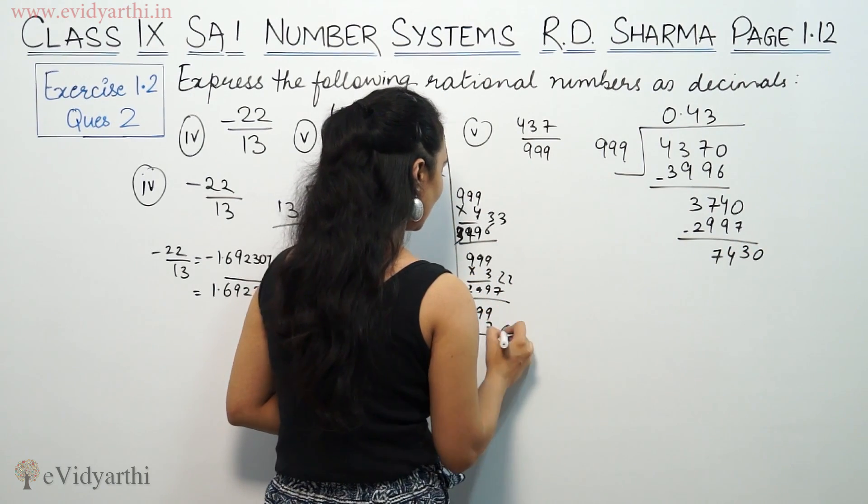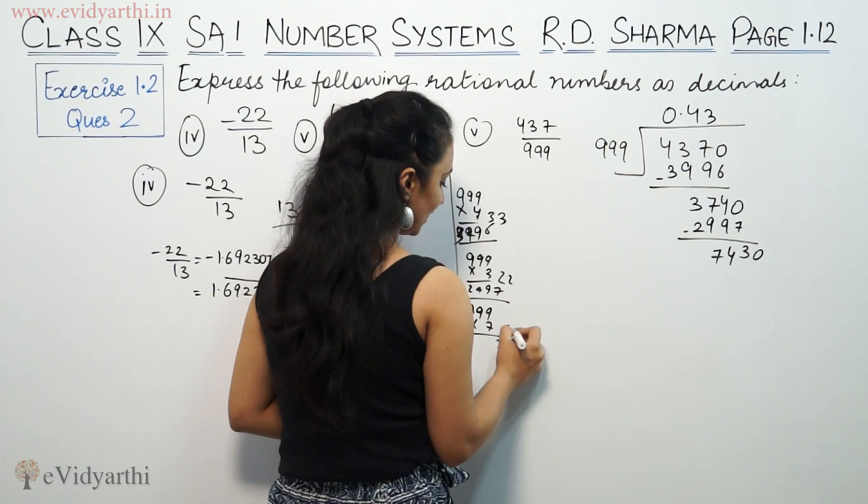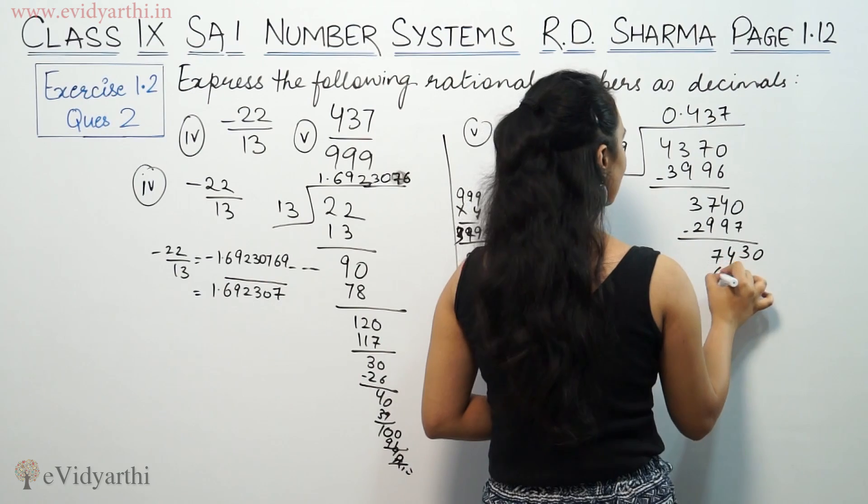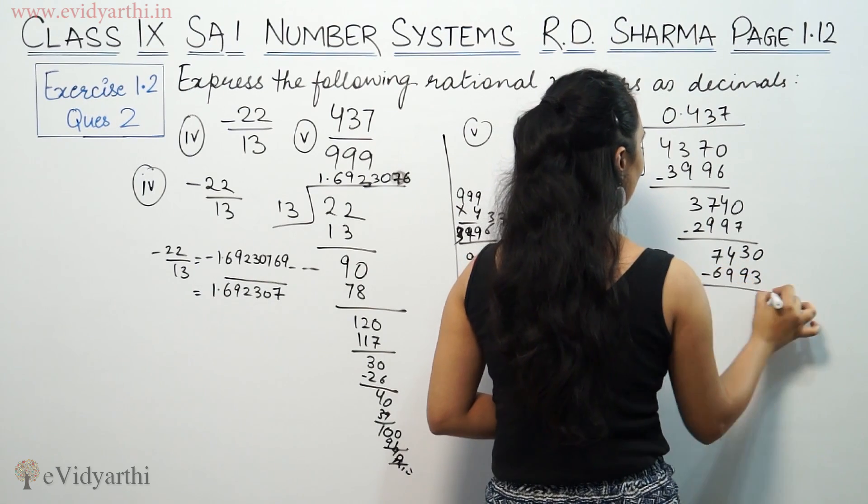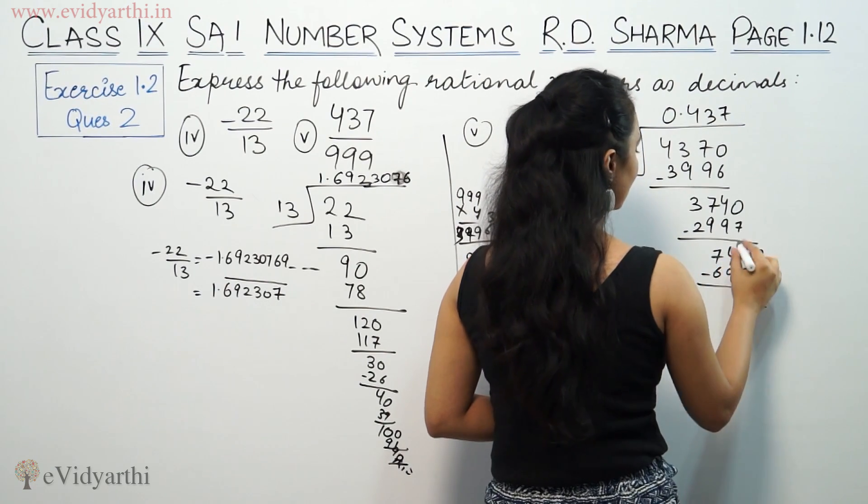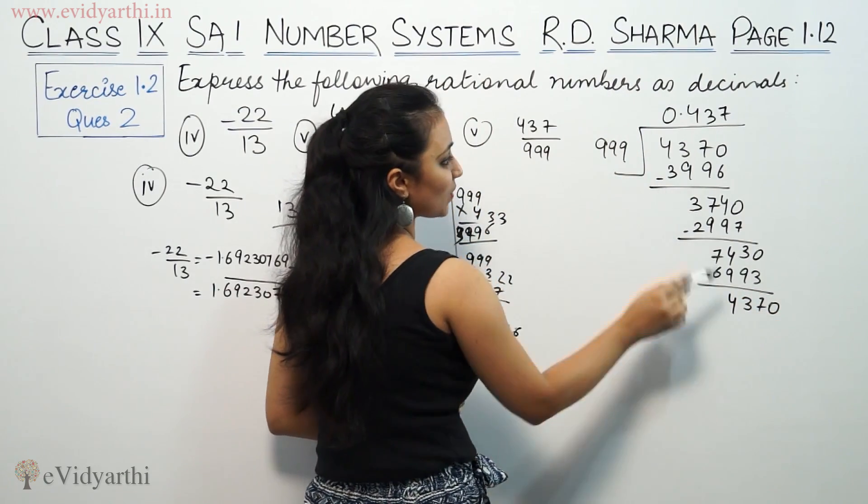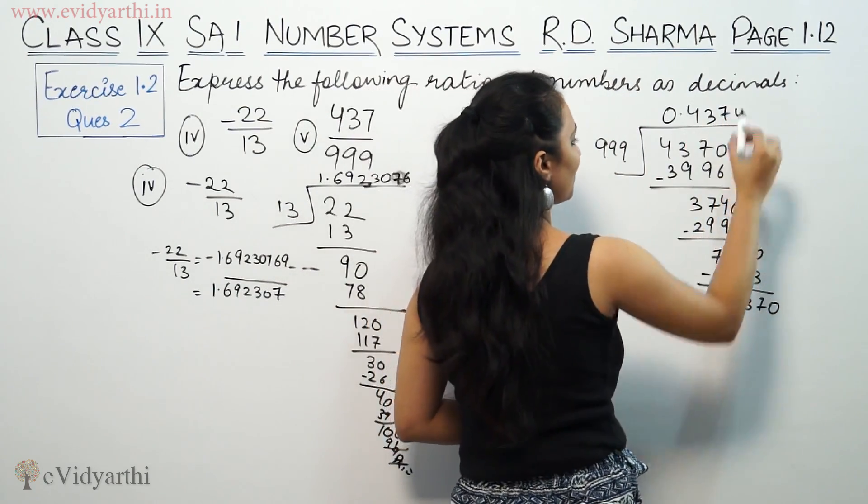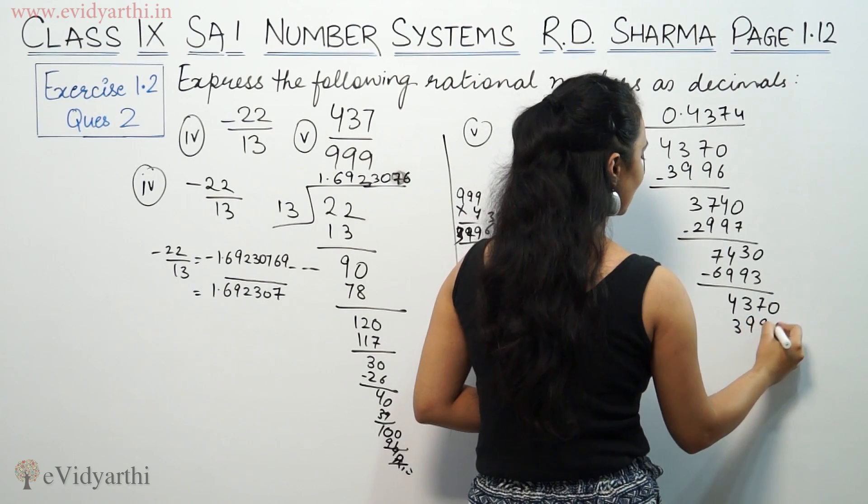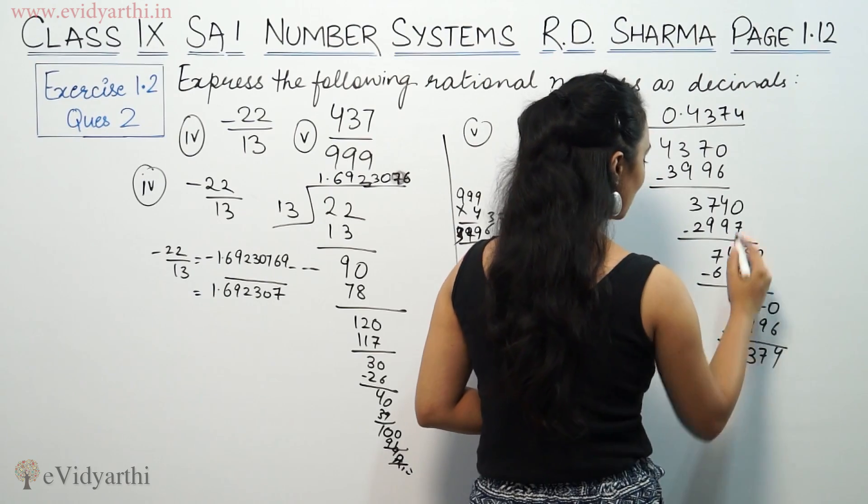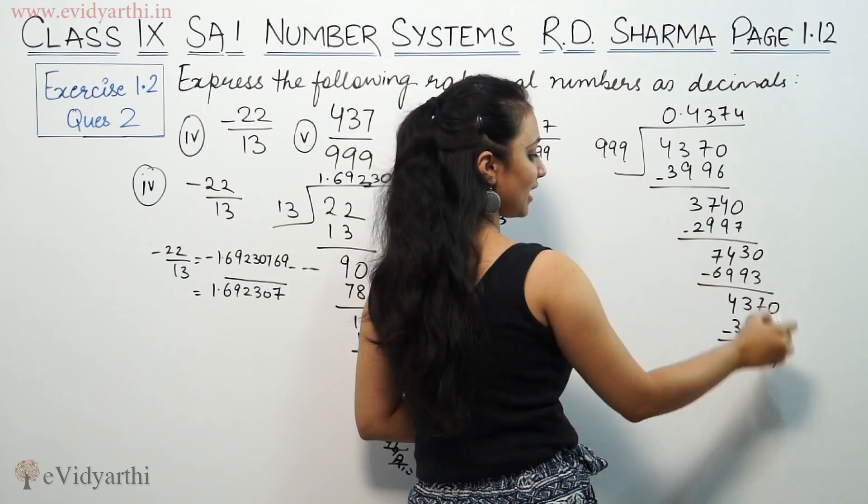Continuing the division, we see the same digits appearing again. The pattern 437 repeats. So we have the digits 4, 3, 7 repeating after the decimal point.